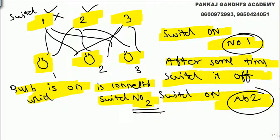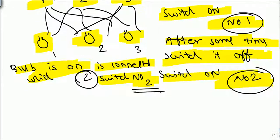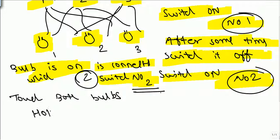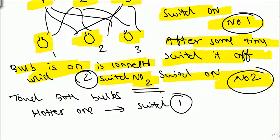The bulb which is on — glowing — is connected by switch number two. Now what we do is touch both the remaining bulbs. The hotter one of the two remaining bulbs is obviously connected by switch number one, since it was on for some time and then switched off.